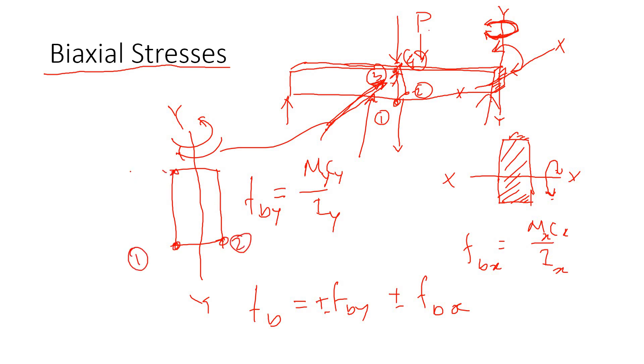This is point 2, point 3, point 4. As you can see, points 1 and 3 for F_BY will be in compression, so compression is negative. Points 2 and 4 will be in tension for this stress. We'll have to manually add these.